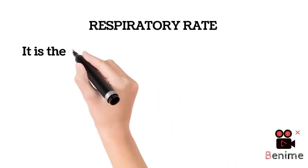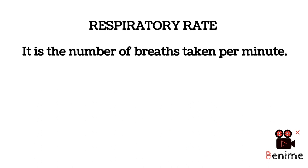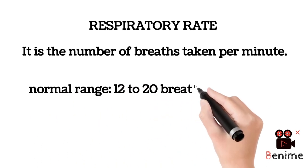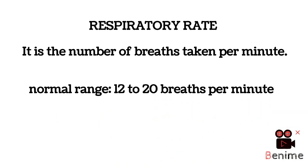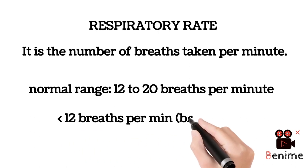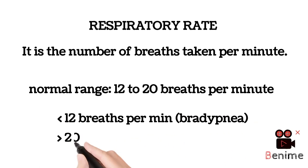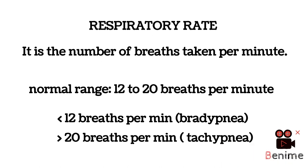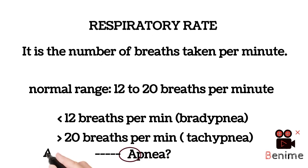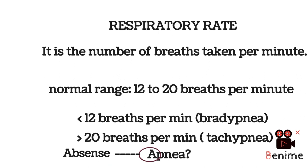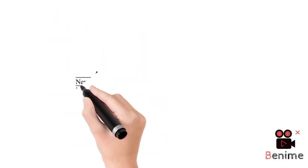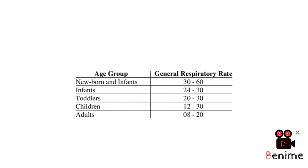Let's talk about the respiratory rate. It is the number of breaths taken per minute. The normal range is 12 to 20 breaths per minute. When the respiratory rate decreases below 12 breaths per minute, it is called bradypnea, and a respiratory rate greater than 20 breaths per minute is defined as tachypnea. Apnea means cessation of breathing for 15 seconds. Just like heart rate, respiratory rate also varies among individuals.